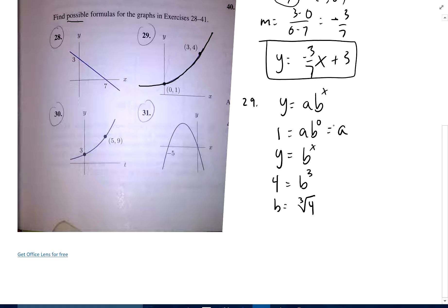So my equation for this function would be y equals 1 times the cube root of 4. I'm going to write that as 4 to the 1 third to the x power. And I can rewrite that as 4 to the x over 3 power, if I wanted to simplify it more like that. Okay, 30.